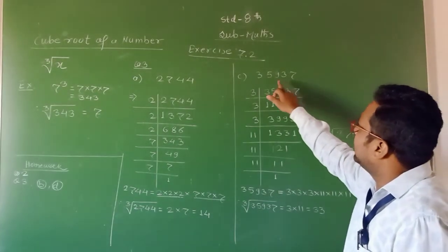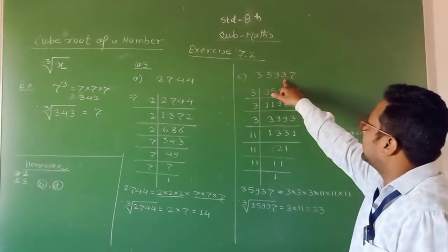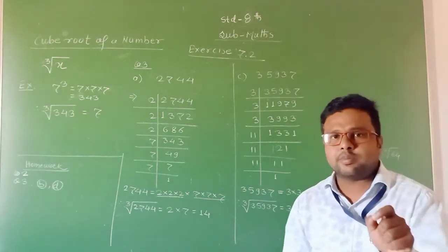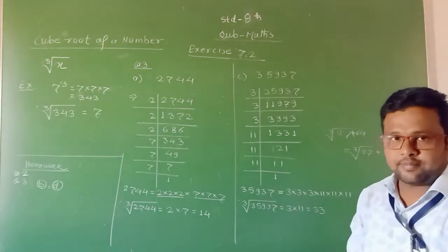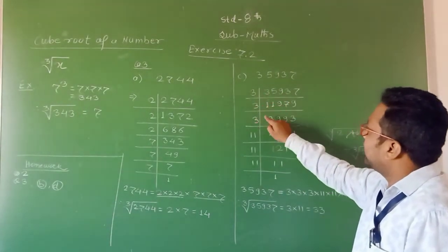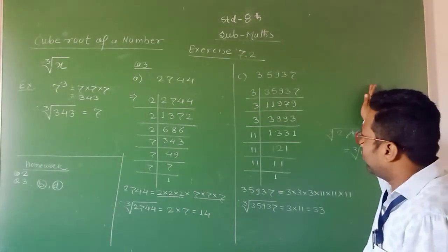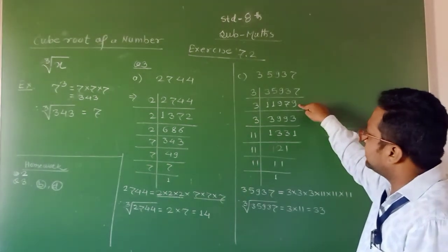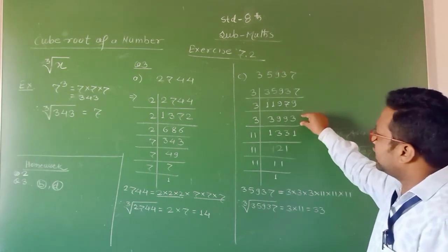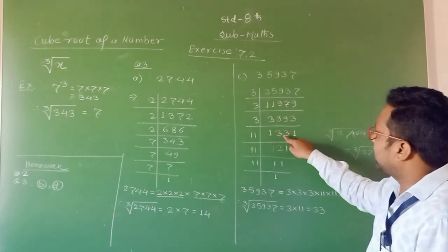Then we check for the next prime number, 3. Using the divisibility property: 5 plus 3 is 8, 8 plus 9 is 17, 17 plus 3 is 20, 20 plus 7 is 27. Since 27 is divisible by 3, the whole number is divisible by 3. After division, we get 11,979. Again divisible by 3 — we get 3,993. Again divisible by 3, and we get 1331.